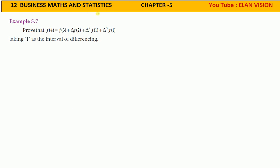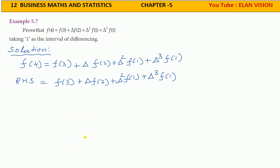12th standard business maths and statistics, chapter 5, YouTube channel Elan Vision. Prove that f(4) equals f(3) plus delta f(2) plus delta squared f(1) plus delta cubed f(1), taking 1 as the interval of differencing.